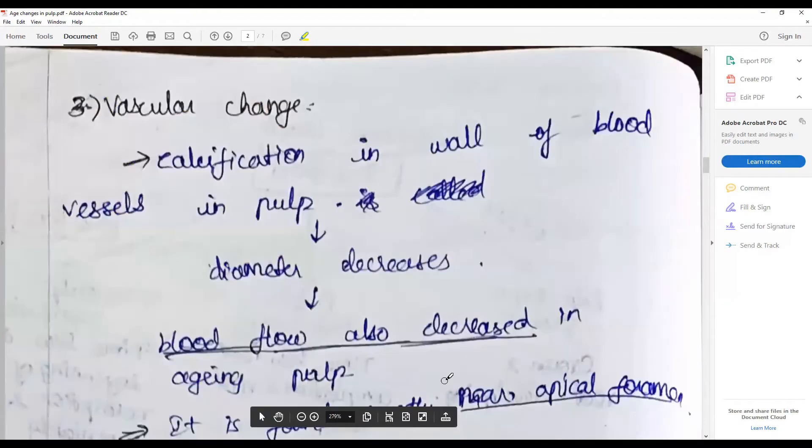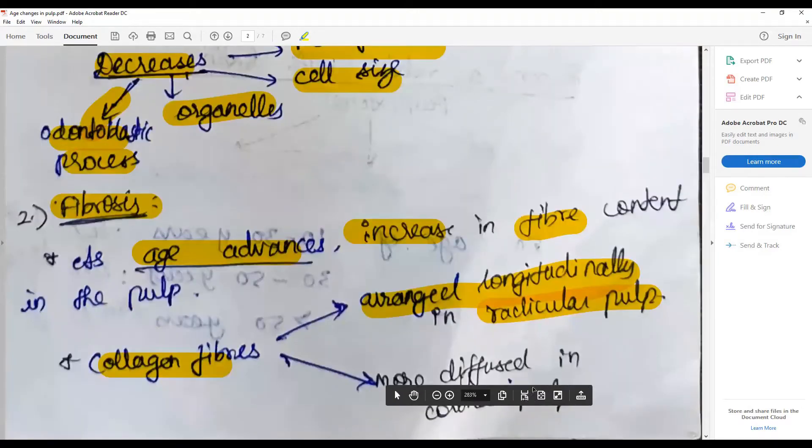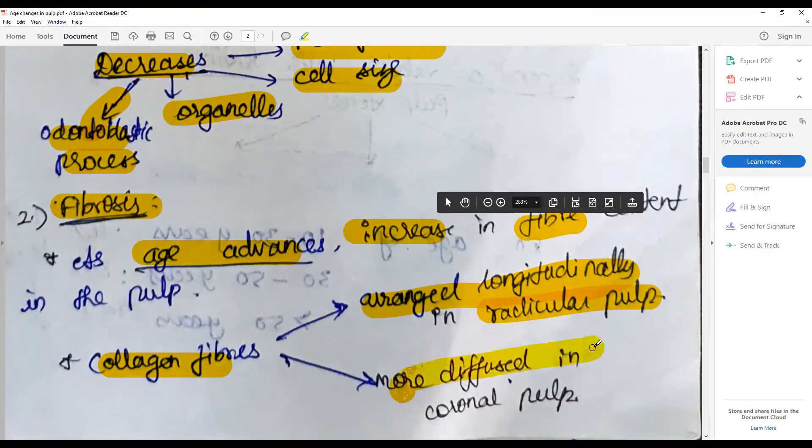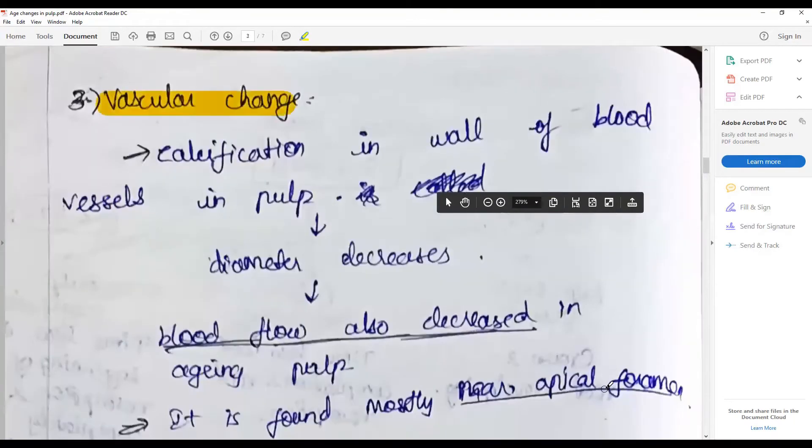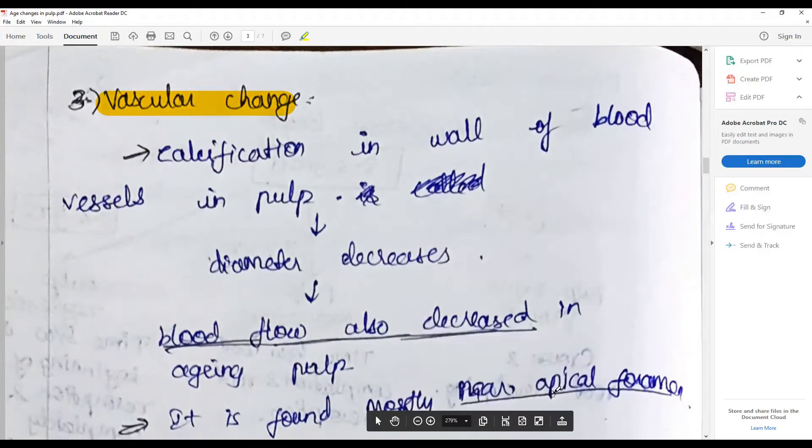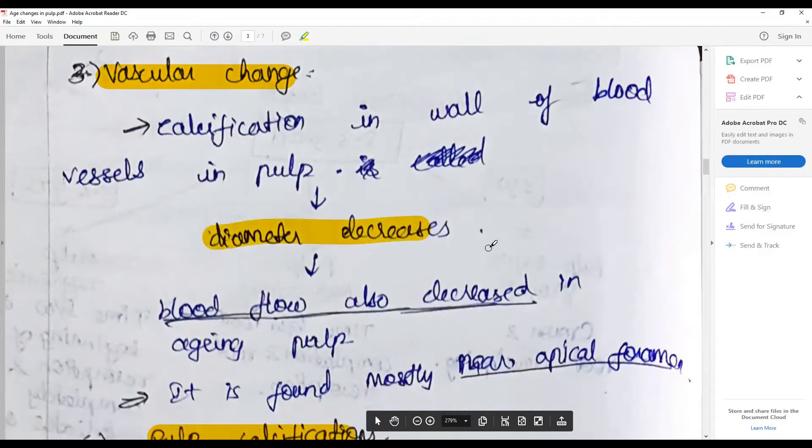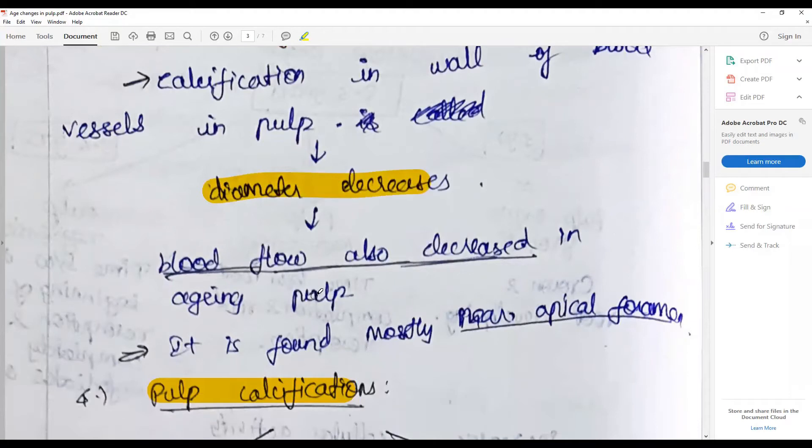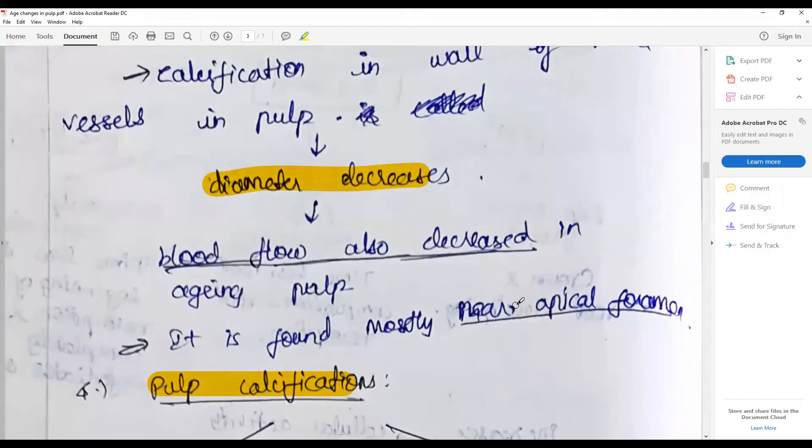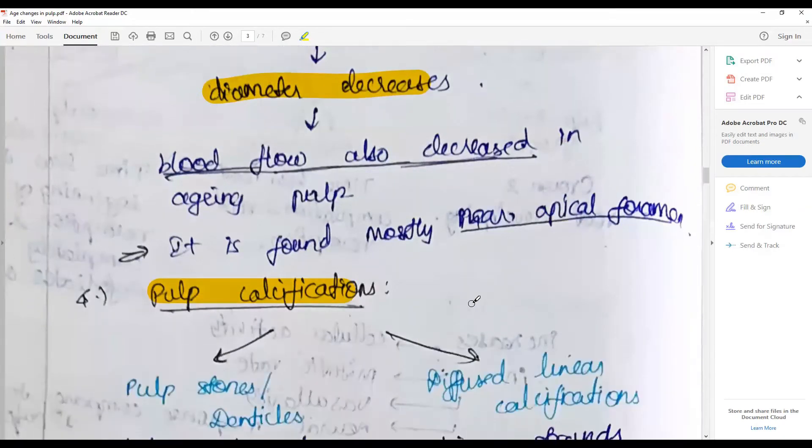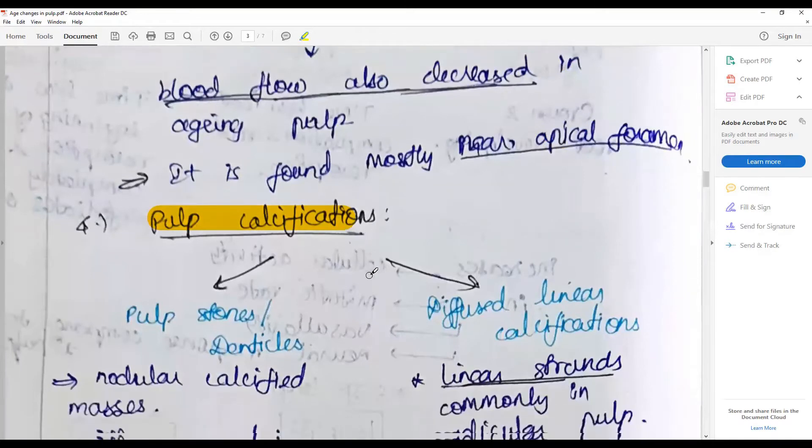The fibers are mostly collagen fibers which are arranged longitudinally in radicular pulp and more diffused in coronal pulp. Vascular changes: the vascular changes bring about calcification and altered blood flow, and as a result of which diameter decreases, leading to blood flow decreased in aging pulp. This is mostly nearer to the apical foramen.